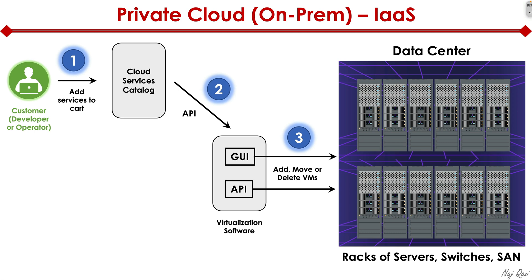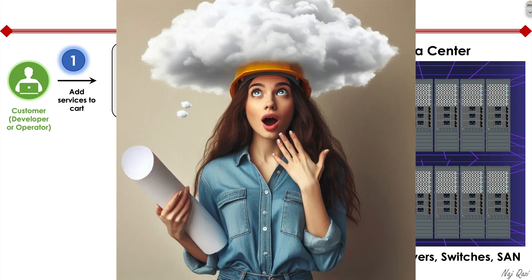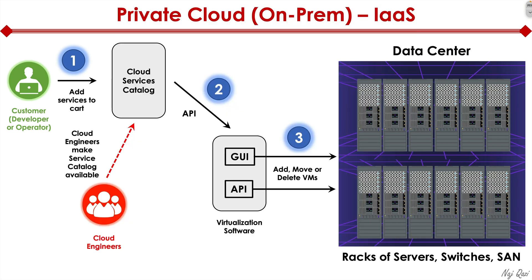What's cool here, as compared to the previous workflow, is that we don't have the data center engineering team in the middle of the workflow — we literally removed that team from the process. The data center engineers are still needed, but now it's called a cloud engineering team. Their job function is to make the cloud services catalog available to the programmers.